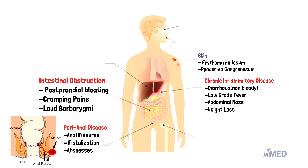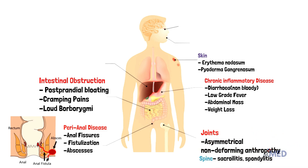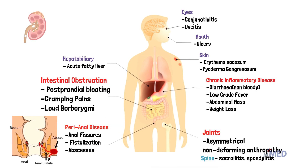Erythema nodosum and pyoderma gangrenosum are common skin conditions in Crohn's disease. Erythema nodosum presents as painful nodular erythematous rashes usually seen on the shins, caused by circulating immune complexes reacting in fat cells under the skin. Pyoderma gangrenosum is due to abnormal neutrophils. On histology we can also see non-caseating granulomas. Patients with Crohn's disease often complain of joint pains, mouth ulcers, eye inflammation, and hepatobiliary conditions.